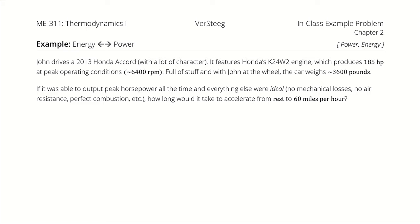Full of stuff, and with John at the wheel, the car weighs 3,600 pounds. If it were able to output peak horsepower all the time and everything else were ideal — no mechanical losses, no air resistance, perfect combustion all the time — how long would it take for John's car to accelerate from rest to 60 miles per hour?